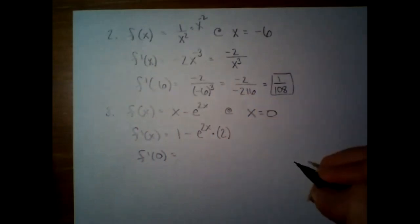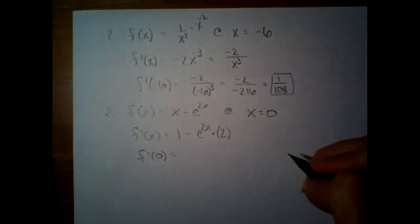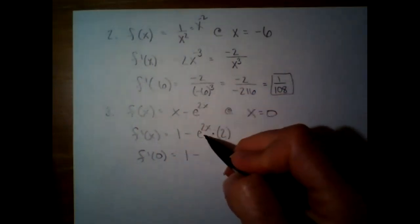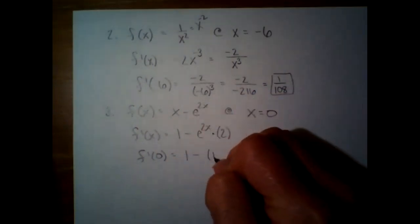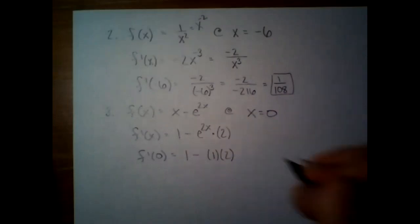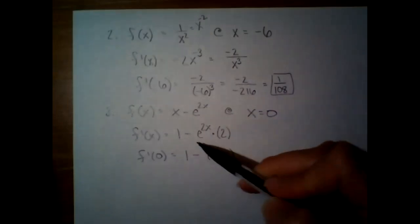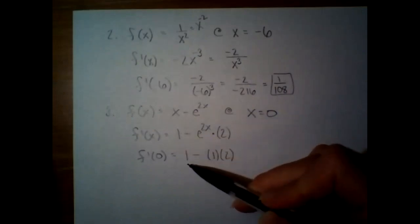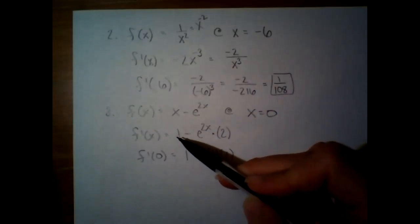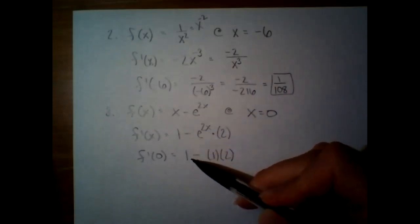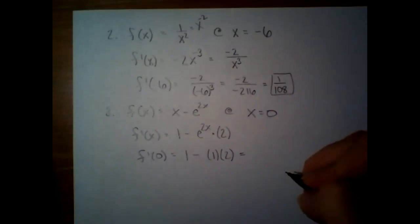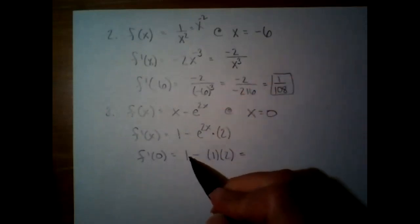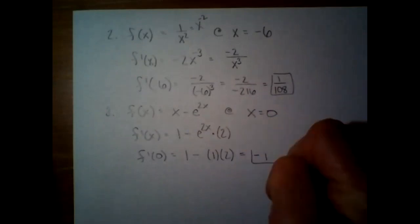There's a chain rule — we have to chain on the derivative of 2x, which is two. Then we plug in zero: e to the zero is one, times two. The most common mistake was that people didn't bring the one with them from one line to the next — that's just a copy error. So this would be one minus two, which is negative one.